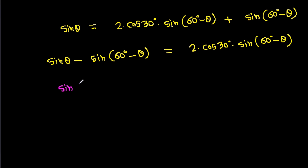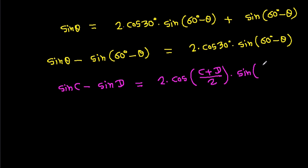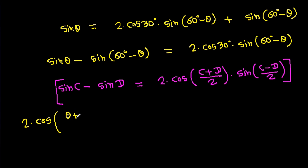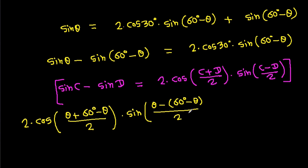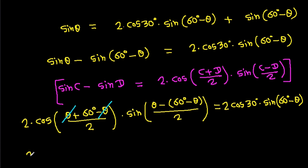So sin theta equals 2 cos 30 degrees times sin(60 degrees minus theta) plus sin(60 degrees minus theta). We know that sin C minus sin D equals 2 cos((C+D)/2) times sin((C-D)/2). So sin theta minus sin(60 degrees minus theta) equals 2 cos 30 degrees times sin(60 degrees minus theta).